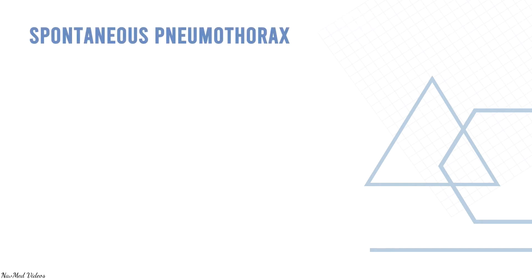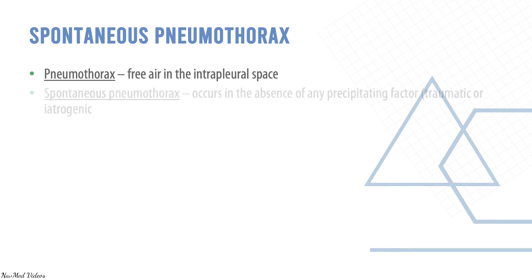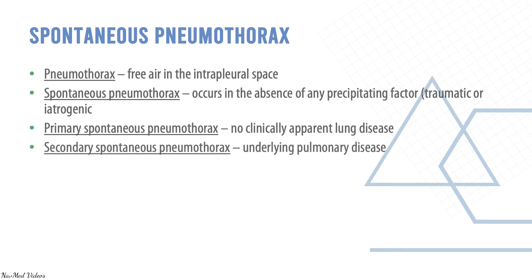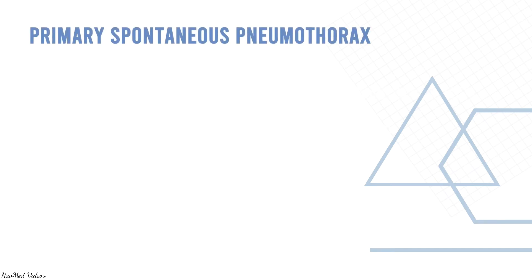Spontaneous pneumothorax is free air in the intrapleural space. It occurs in the absence of any precipitating traumatic or iatrogenic factor. Primary spontaneous pneumothorax involves no clinically apparent underlying pulmonary disease. The incidence is 15 per 100,000 per year for men and 5 per 100,000 per year for women. It generally affects young men of taller than average height.